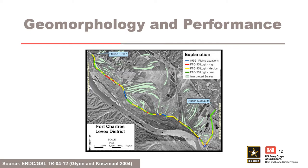This slide demonstrates how understanding previous levee performance and river geomorphology helps identify locations where backward erosion piping may occur. Levee reaches are shown in relation to piping locations in 1995 and identified swales for the Fort Chartres Levee District. The majority of high and medium likelihood reaches occur near intersection of swales with the levee, and where swales run parallel to the levee. The authors believe the strong correlation with previous piping occurred because these pipes have remained as preferred pathways of higher permeability, needing less gradient to reactivate in future flood events.